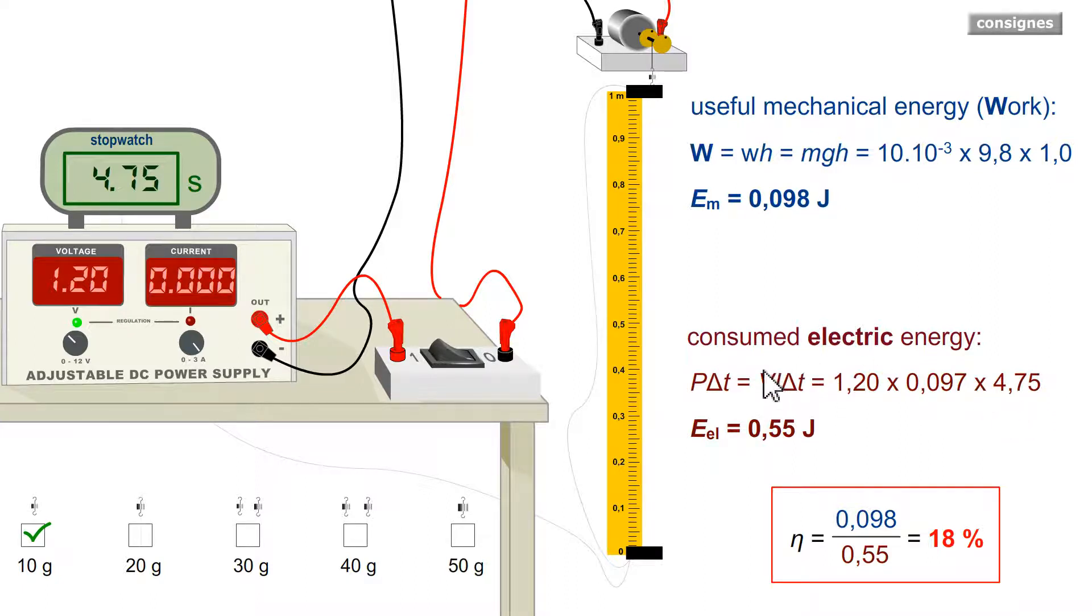By multiplying VI delta T equals P delta T which gives me the electric energy. Mechanical energy will be the work of the force exerted by the wire. Since the mass rose at constant speed, the force was equal to the weight. Mechanical energy is weight multiplied by distance.